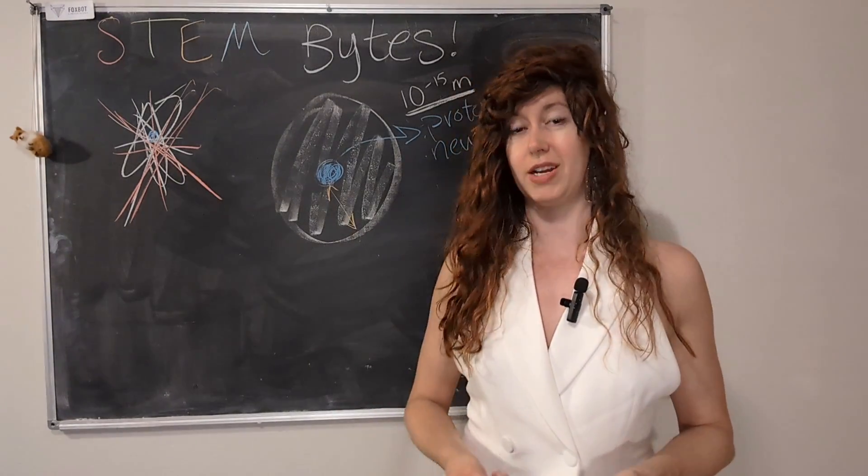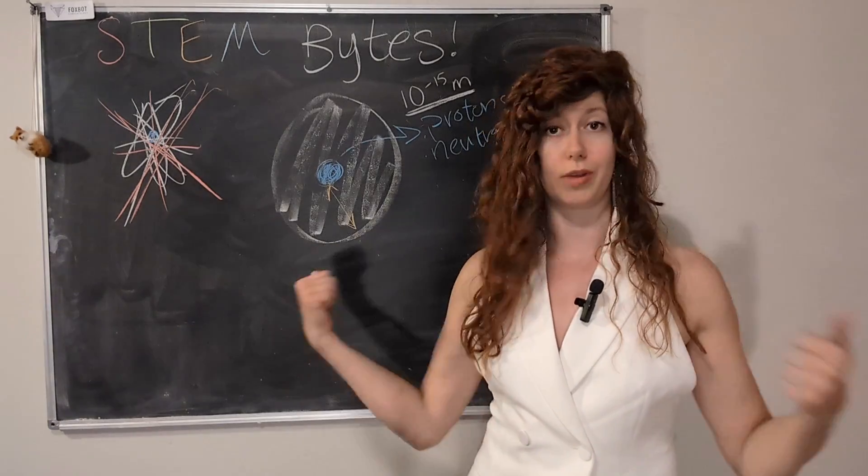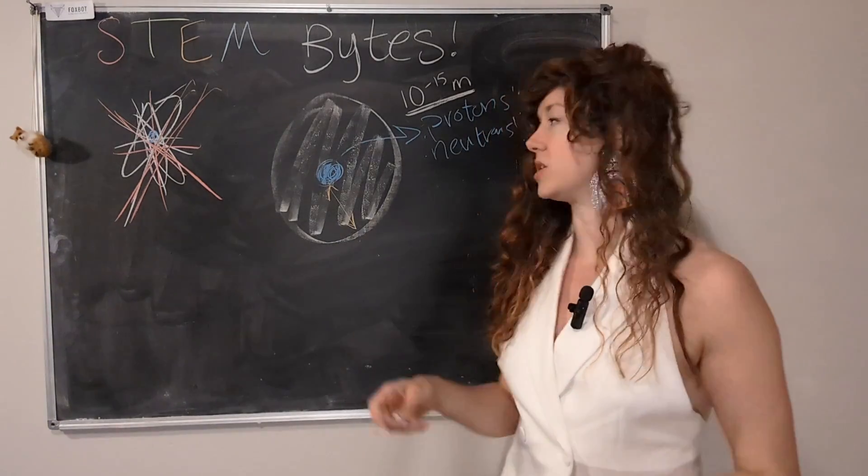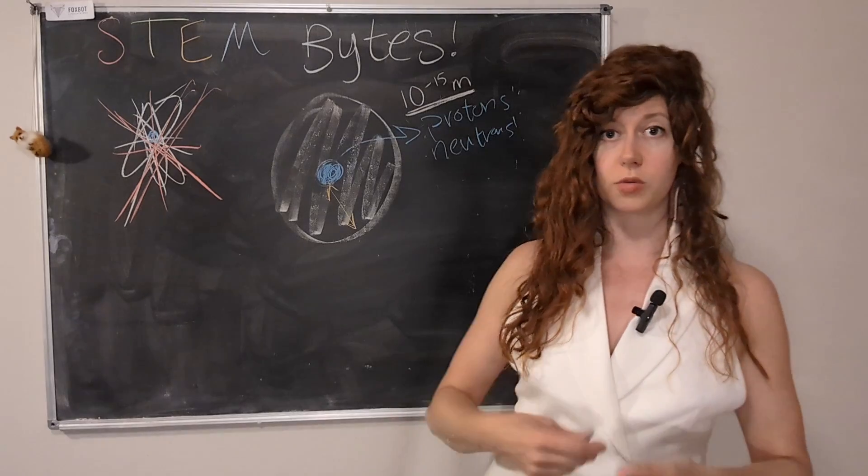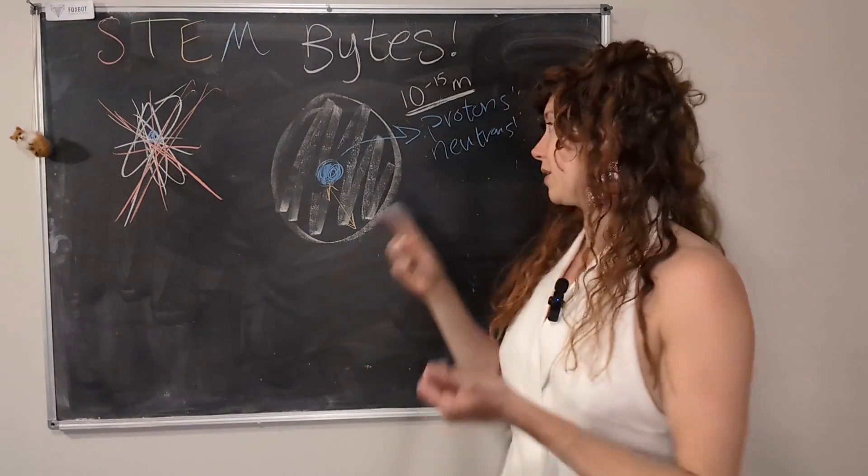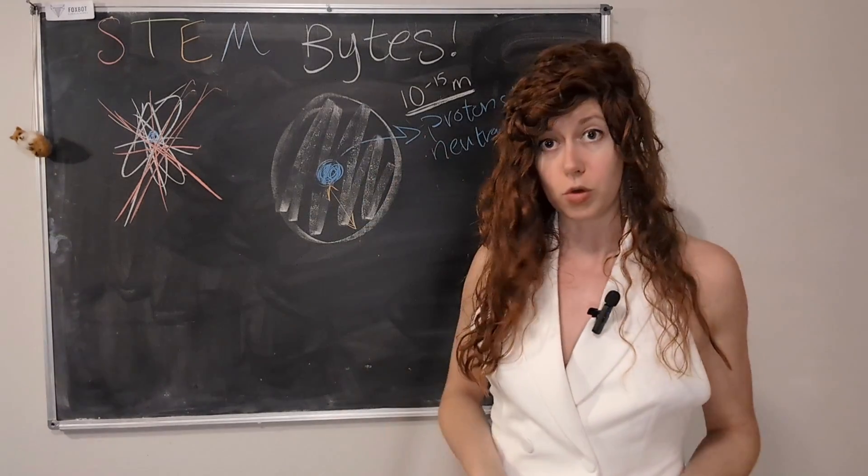So, if you want to pull these apart, you need a ton of energy. And that's what particle accelerators do. They smash particles together at really, really, really high energies to try to separate particles, like protons and neutrons, from the nucleus.